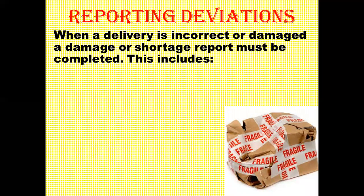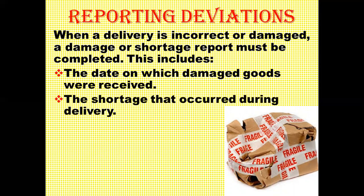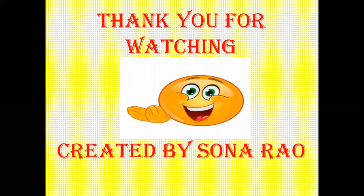If any stock level is less or more than required, it must be reported. When a delivery is incorrect or damaged, a damage or shortage report must be completed. This report should include the date on which damaged goods were received, any shortage that occurred during delivery — for example, if 100 items were ordered but only 99 received — and whether the goods failed to arrive at the stipulated time, such as being ordered on the 10th but received on the 15th.